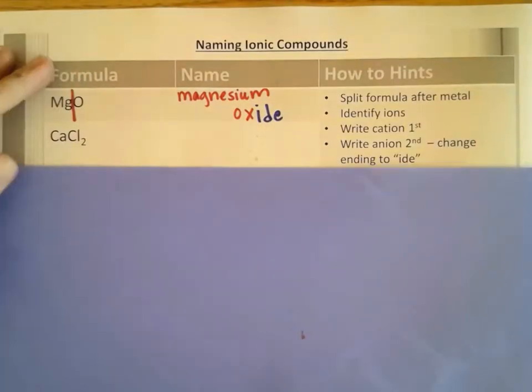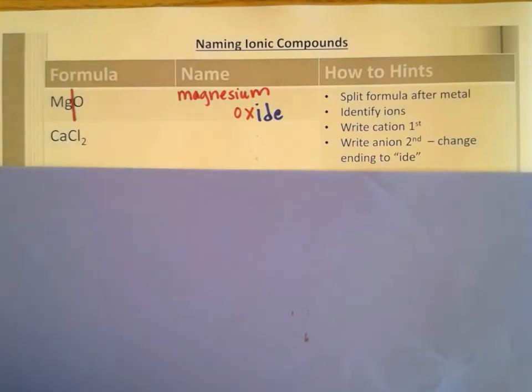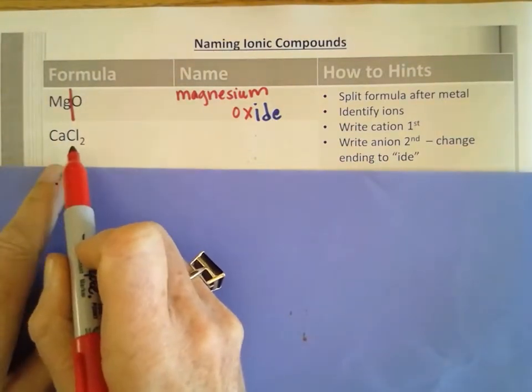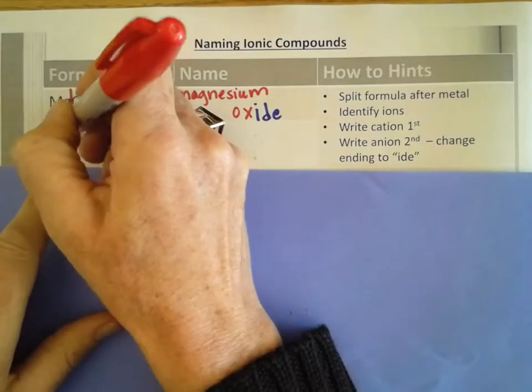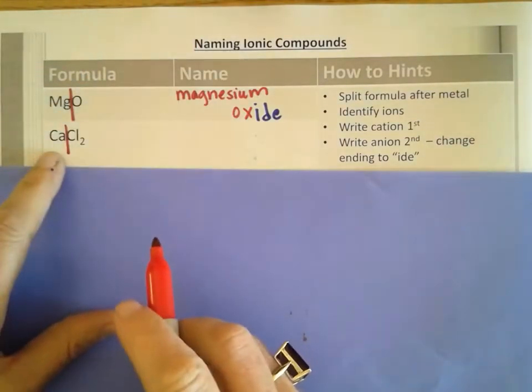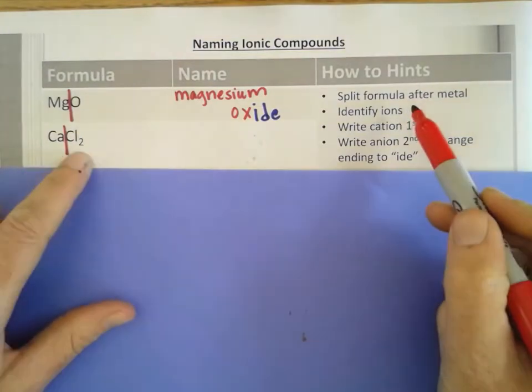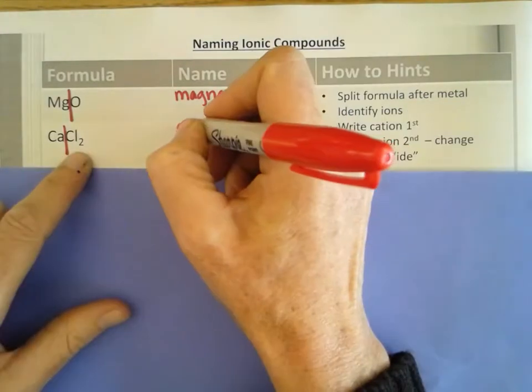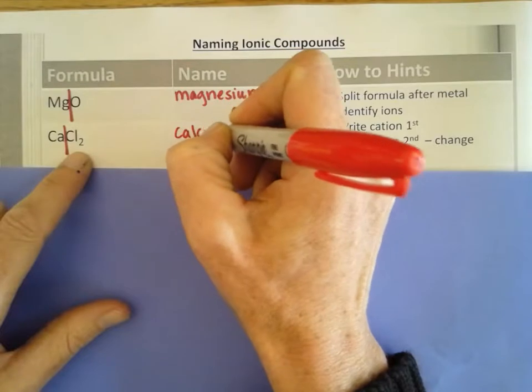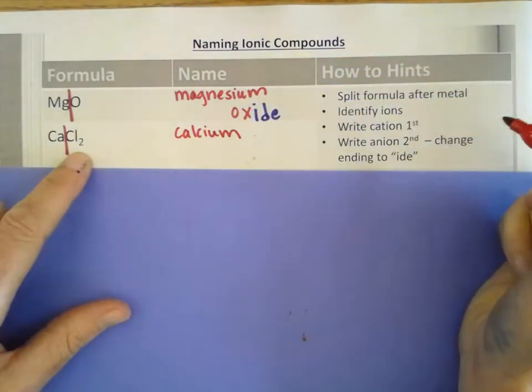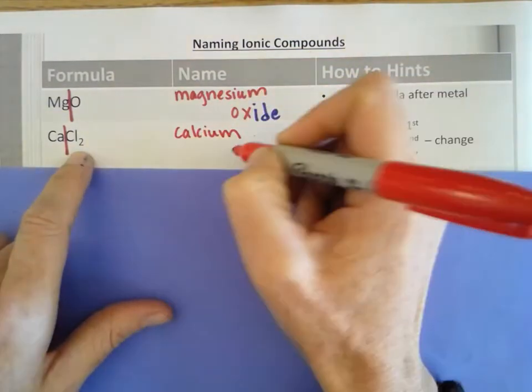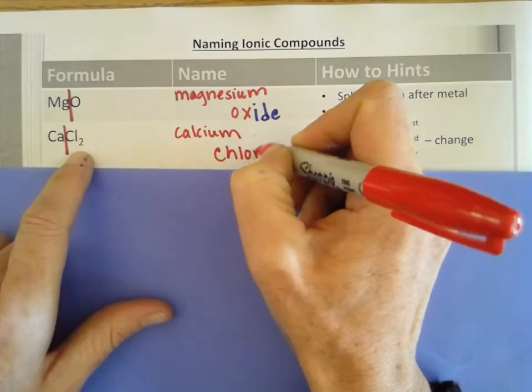I'm going to do the second one also. If I take a look at this, I have calcium and chlorine. Calcium is a metal. Everything on this side is going to be one ion and everything on the other side is the other. Again, the first one is just the name you find on the periodic table, calcium. And then chlorine changes to chloride.